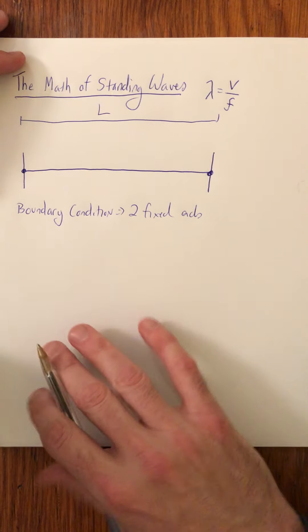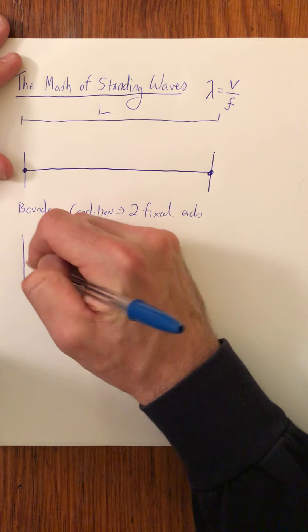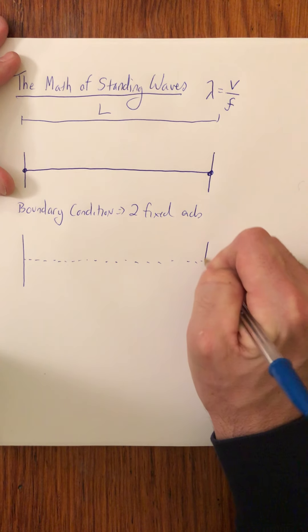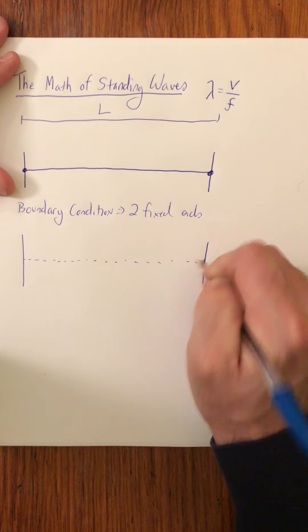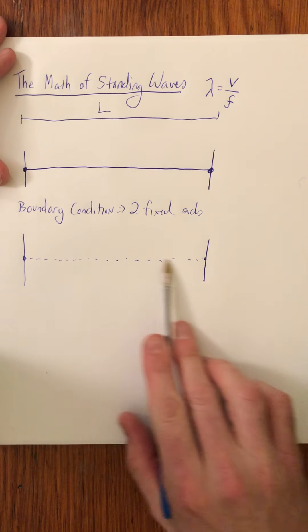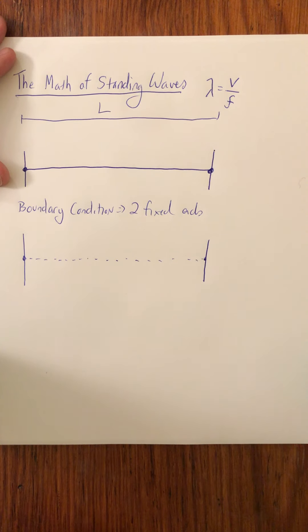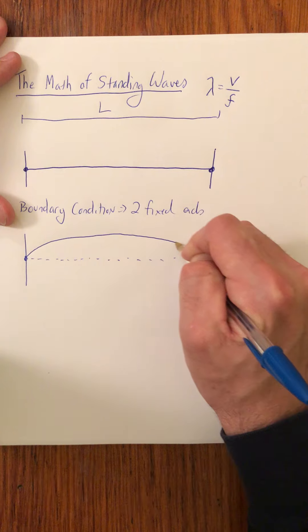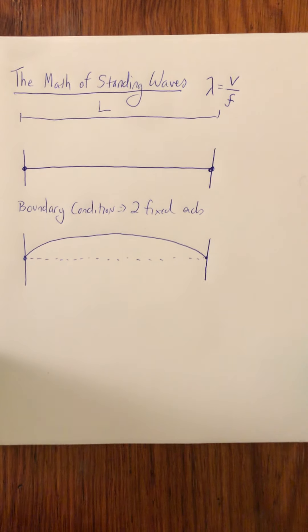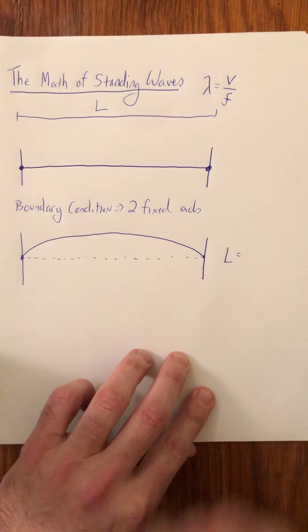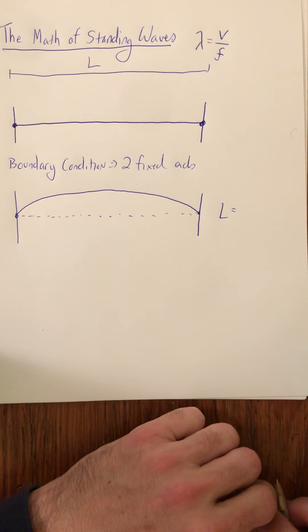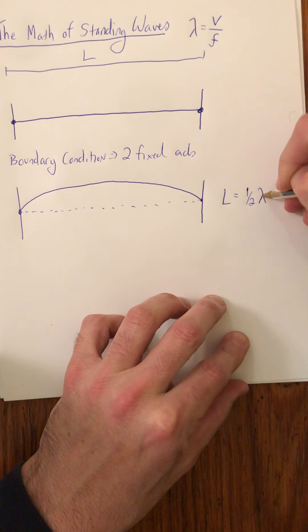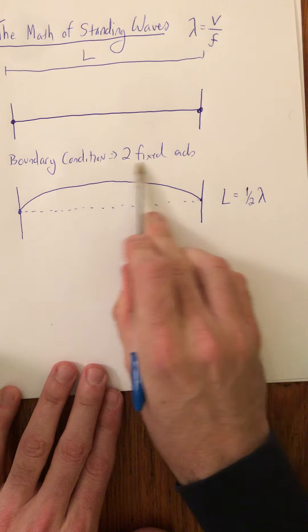As we saw in the demos that we looked at, we have different what are called modes of vibration where that happens. Here's what we have. There's the equilibrium line. The first mode, the n equals one mode, looks like this at one instant in time. So L is equal to how much of the wave? And if you said half a wavelength, you're right.